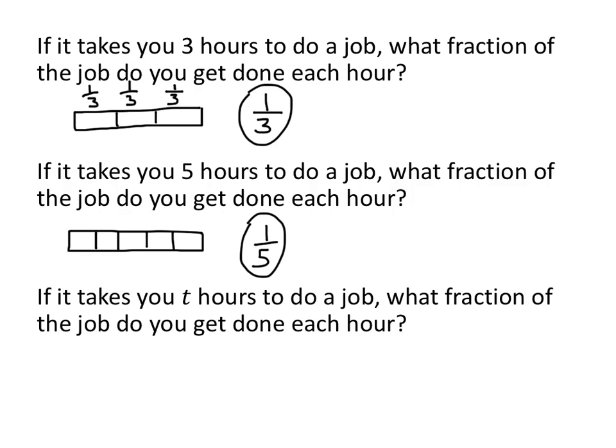So following the pattern here, if it takes us t hours to do a job, then the fraction of the job we can get done each hour is going to be 1 over t. And that works even if t isn't a whole number. It really doesn't matter what kind of number t is. It's going to be 1 over t.